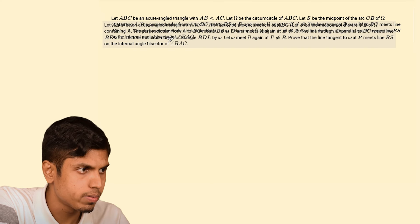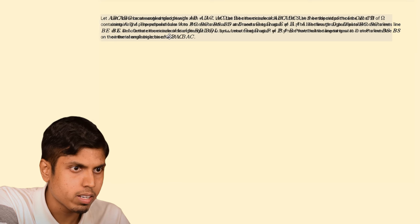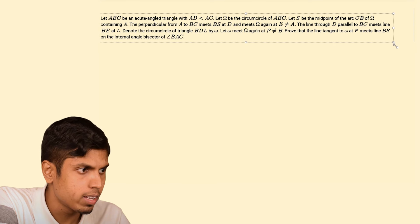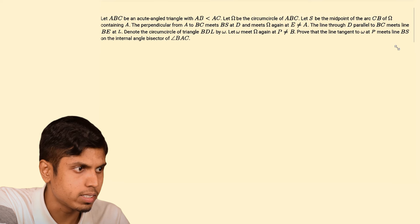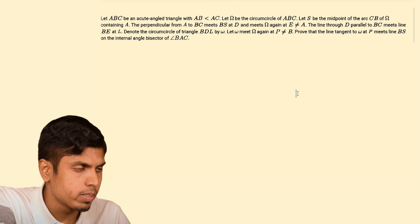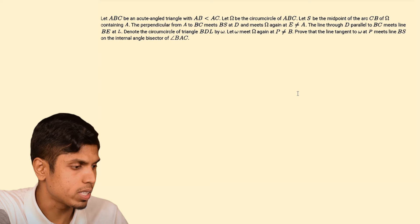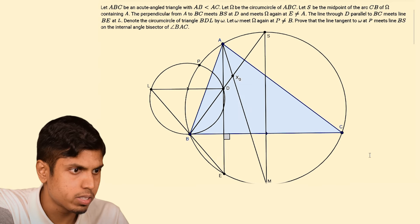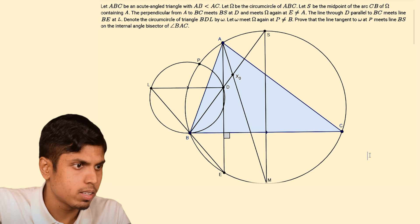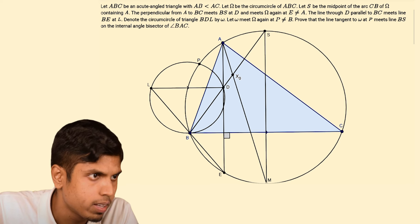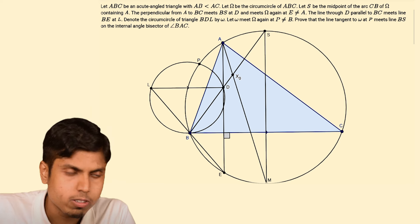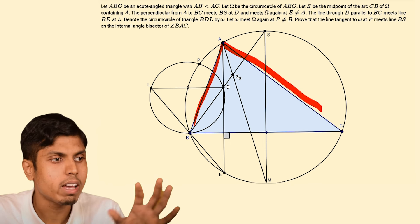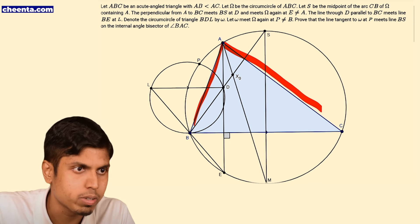Here is the problem statement. We are given an acute-angled triangle with AB less than AC. Here is the picture. We have an acute-angled triangle as shown, and AB is less than AC, which we have incorporated in this diagram as well.